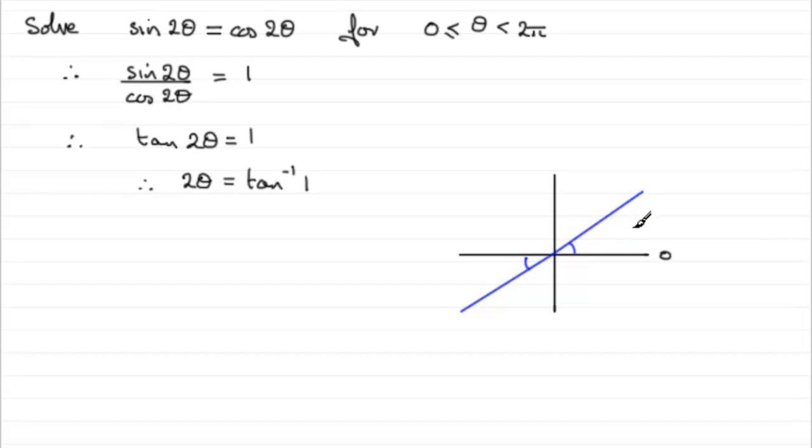Now we've got that, we want to look at the range of values that we require. We're dealing with 2 theta here. So you must look at a new range here, double each of these values. Twice 0 is 0. So you're going to be less than or equal to 2 theta. And double 2 pi, you've got 4 pi. So we need to think of angles in this range. That's our new range then. So where could we get those solutions from?